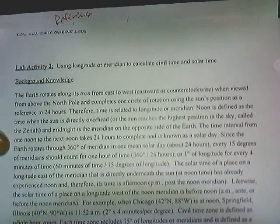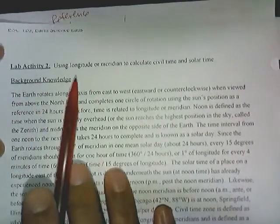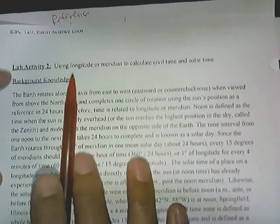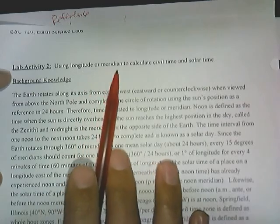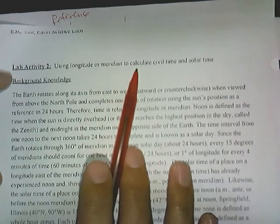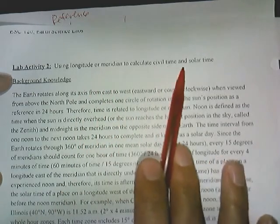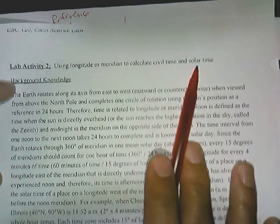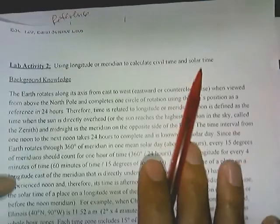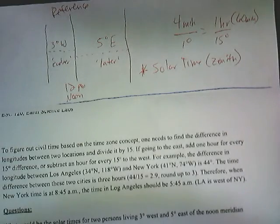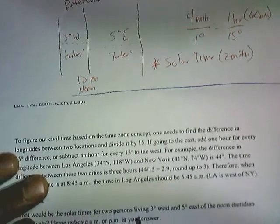This video screencast is going to be on lab activity 2 in your binder, and we are going to be using longitude and meridians to calculate time, both civil and solar time. Most of what we're going to do right now is going to be solar time. The problems we're going to start off with are number one.